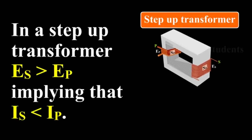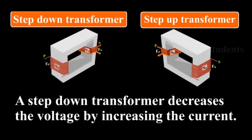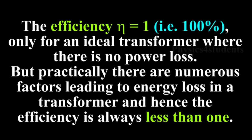In a step-up transformer, ES is greater than EP, which implies IS is less than IP. Thus a step-up transformer increases voltage by decreasing current, in accordance with the law of conservation of energy. A step-down transformer decreases voltage by increasing current. Efficiency of a transformer is defined as the ratio of output power to input power: eta equals ES times IS divided by EP times IP. The efficiency eta equals 1 only for an ideal transformer where there is no power loss. Practically, numerous factors lead to energy loss, so efficiency is always less than 1.